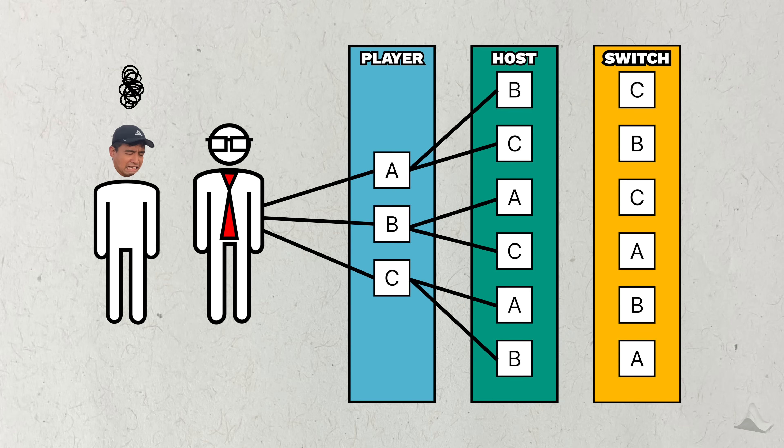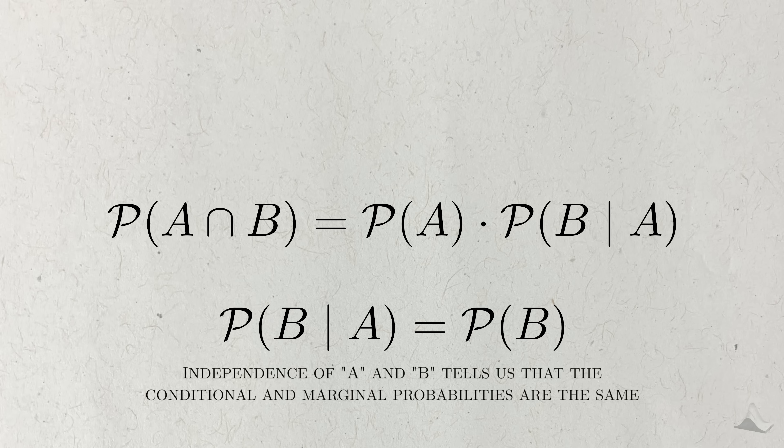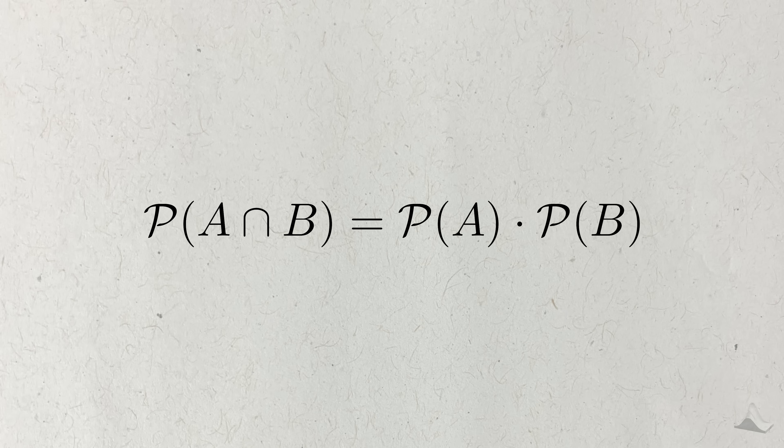You'll have the same probability of winning either way. Since the host no longer reacts to the player's choice, his choice is effectively independent of the player. And he no longer provides any more useful information. You can see this numerically as well. This is the same calculation we used earlier to calculate the probability for each path. But if one event is independent of the other event, the conditional probability is the same as its marginal probability. Which simplifies our probability calculation a little bit.